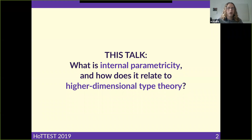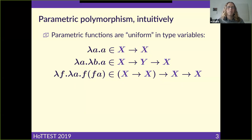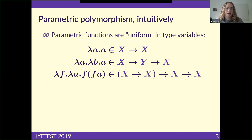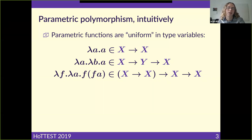My goal is to give you an idea of what internal parametricity is and what it has to do with higher dimensional type theory, specifically cubical type theory. Let me start by talking about what "parametric" means. On an intuitive level, being parametric is a property that a polymorphic function can have. A polymorphic function has some type variables in it — for example, the polymorphic identity function can take something of any type and produce something of the same type. What's common to these examples is that their behavior is uniform in the type variables: what they do doesn't depend on what that type variable happens to be instantiated with.